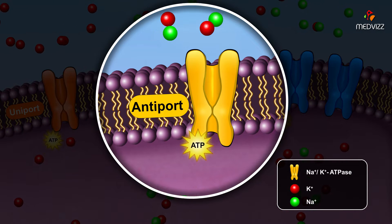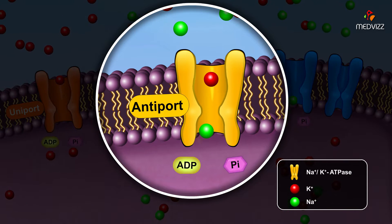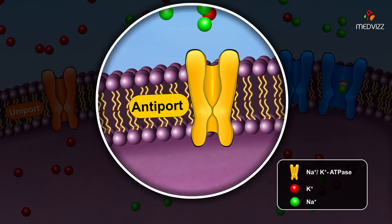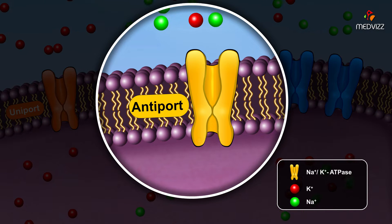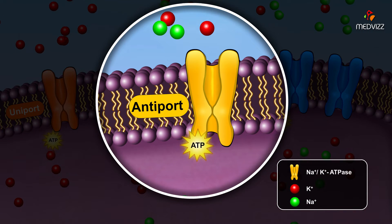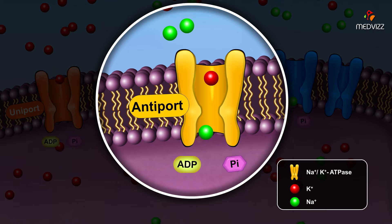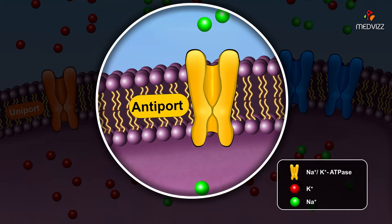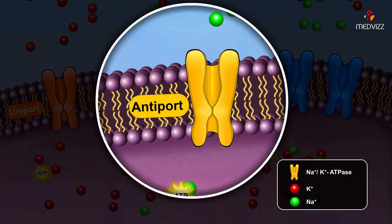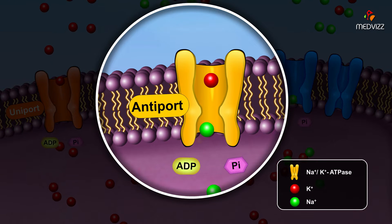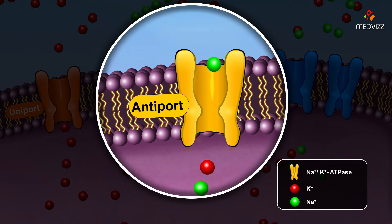An example of an antiport protein channel is a sodium-potassium gated channel that maintains the electrochemical gradient of cells, which is responsible for maintaining a voltage difference between the outside and the inside of the cell.